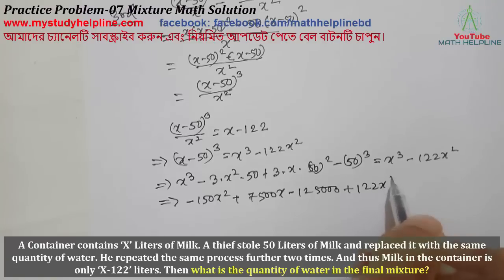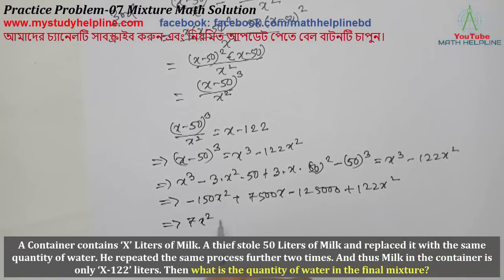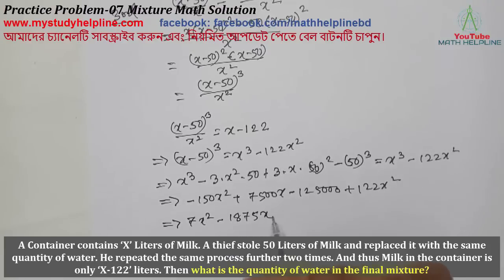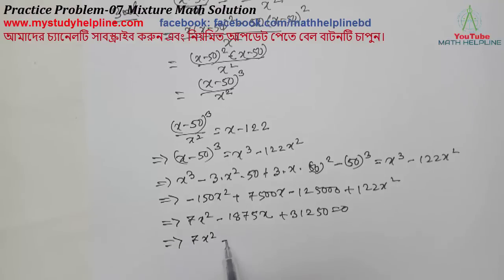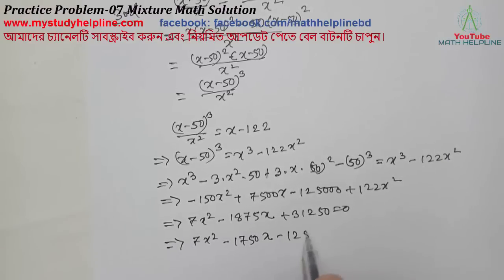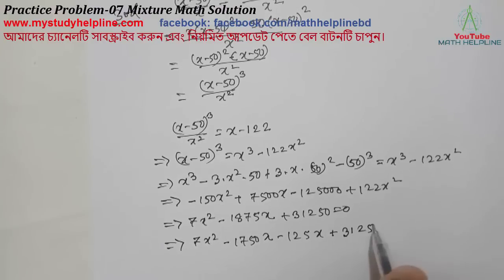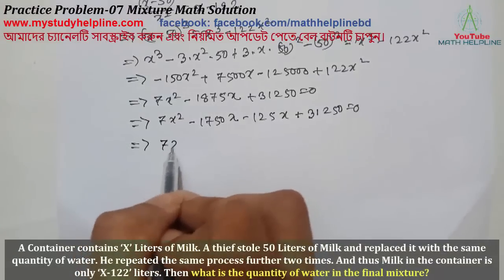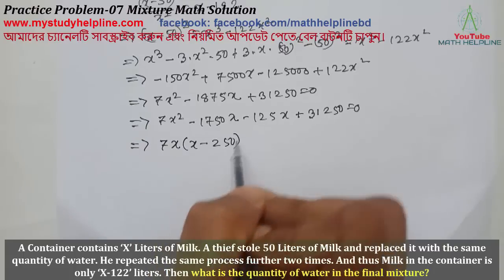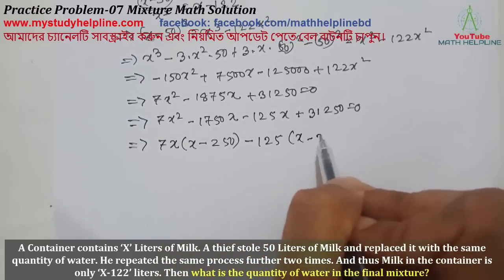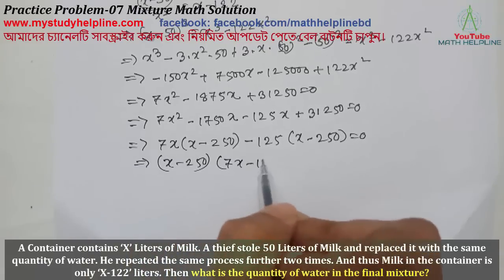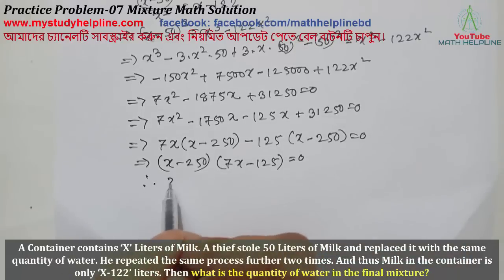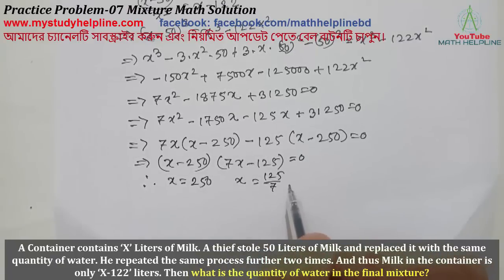After the calculation, we get 7x² - 1875x + 31250 = 0. Factoring: 7x(x - 250) - 125(x - 250) = 0, which gives (x - 250)(7x - 125) = 0. Therefore x = 250 or x = 125/7. Since 125/7 is not a whole number, we take x = 250.